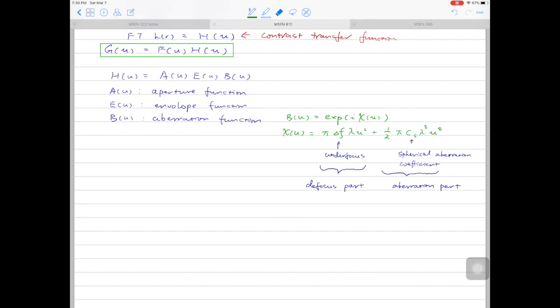Coming back to the chi(u) equation, there are two parts. There's the defocus part and the aberration part. We can take advantage of this to use one defect to offset the other. So there is a concept called Scherzer defocus.